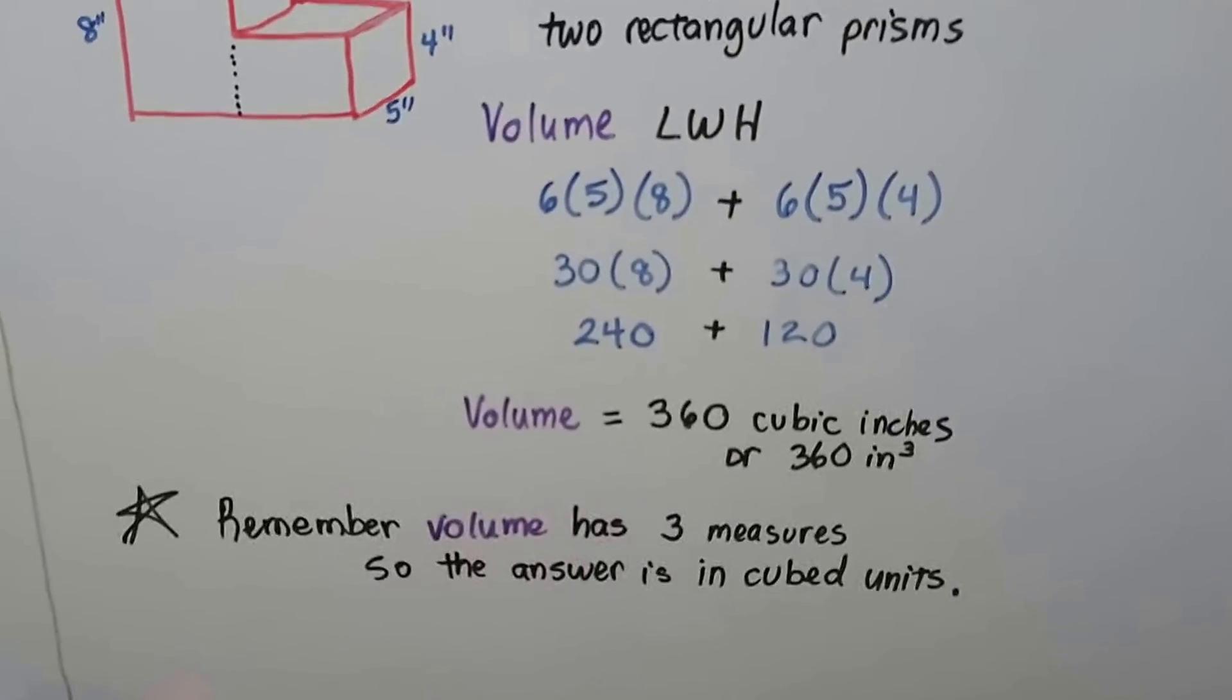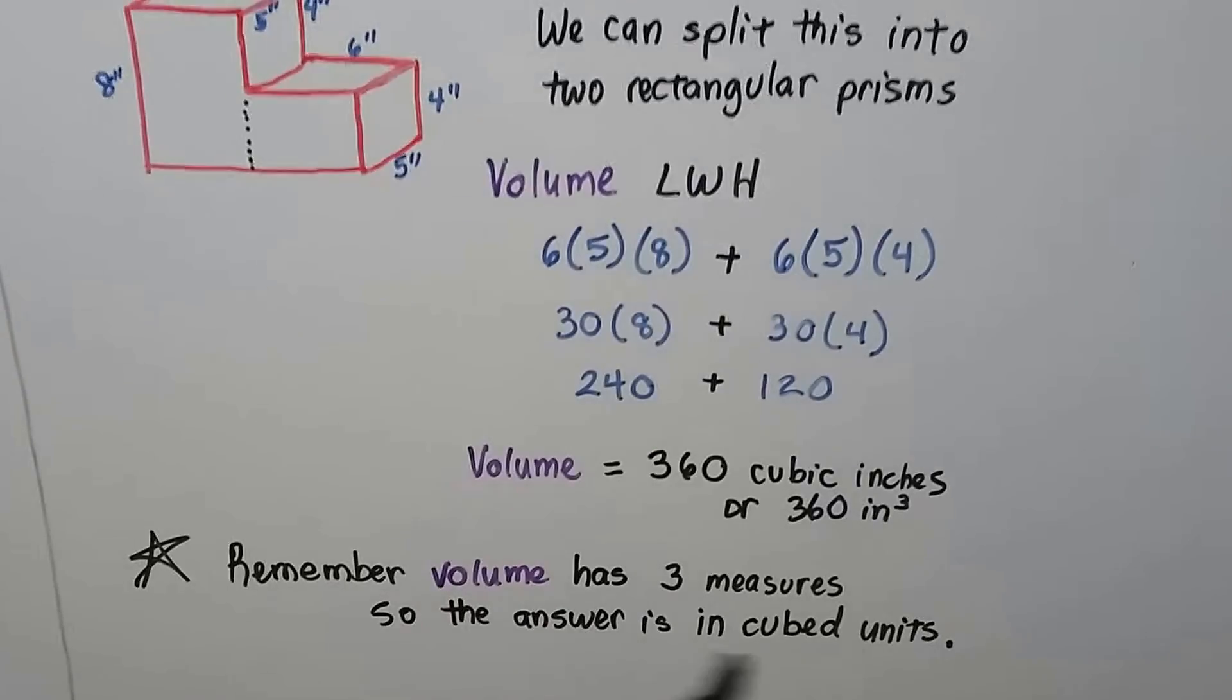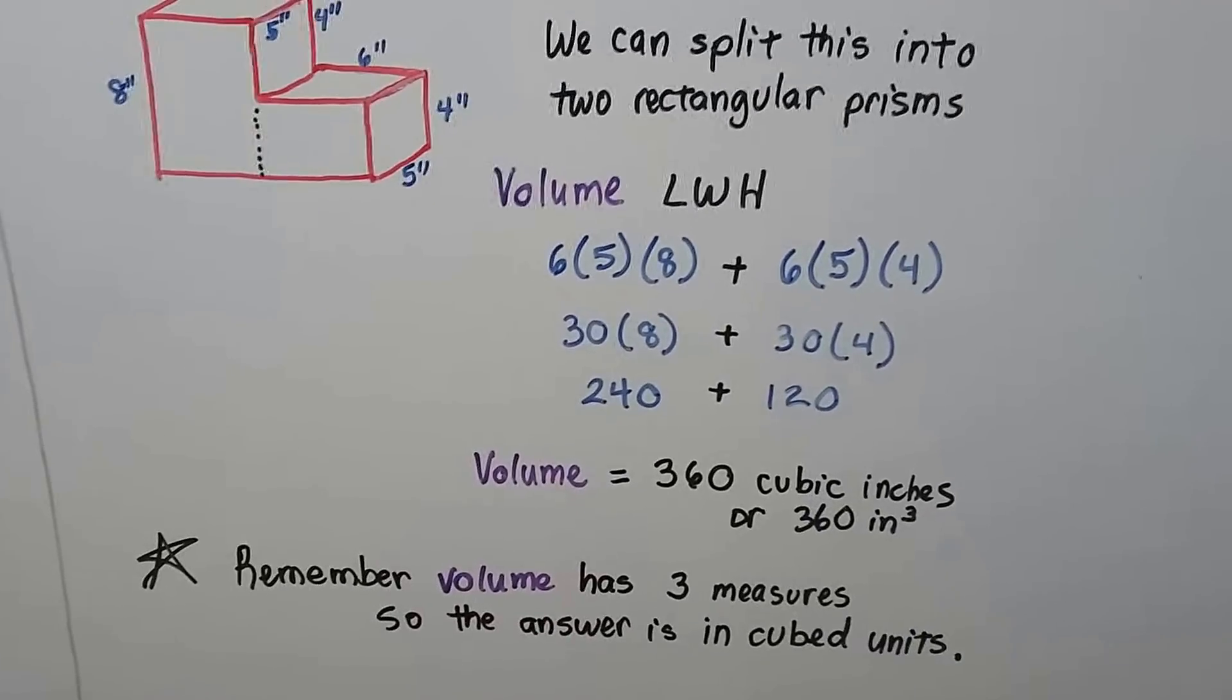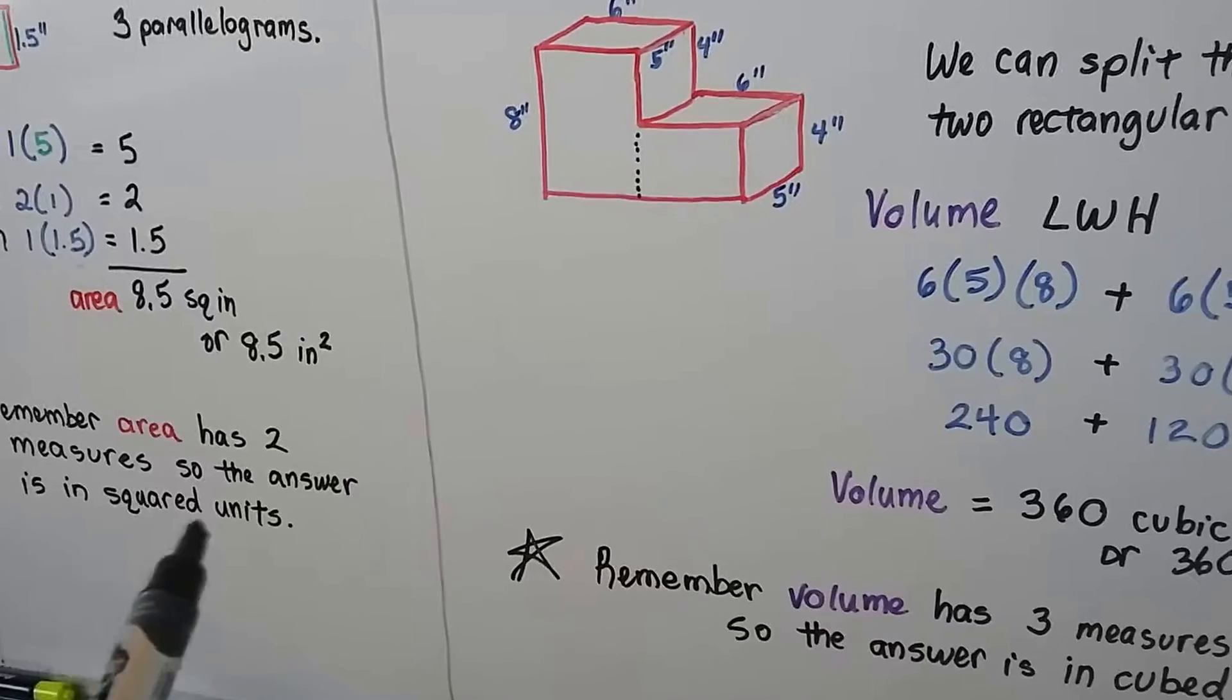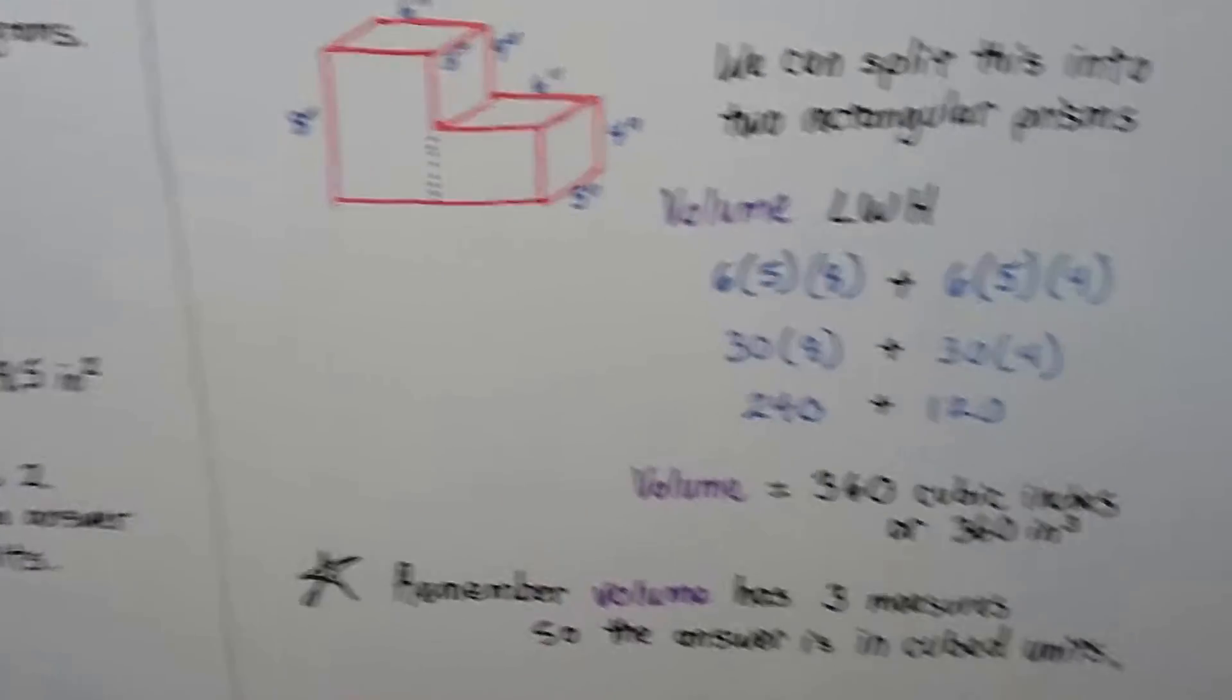Remember, volume has three measures. Length times width times height. So, the answer is in cubed units, with a little 3 exponent. Area is two measures, so it's got the 2 exponent.